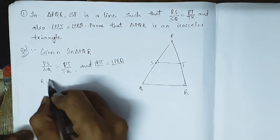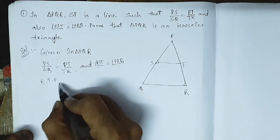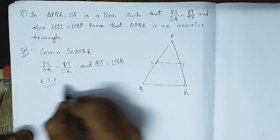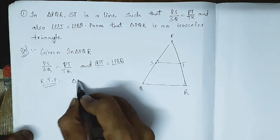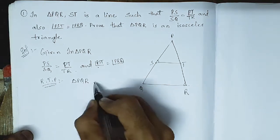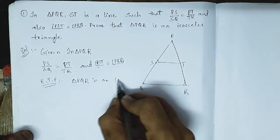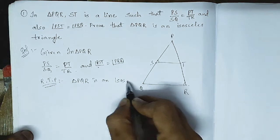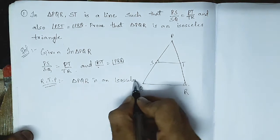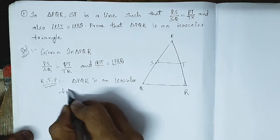We have to prove — required to prove — that triangle PQR is an isosceles triangle.